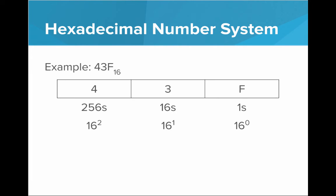To get the value, we multiply each digit by the value of its place. We have 4 times 16 squared, 3 times 16, and F times 16 to the 0.